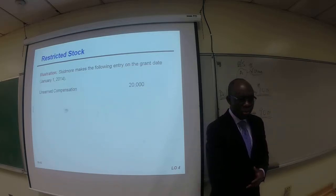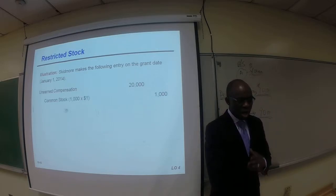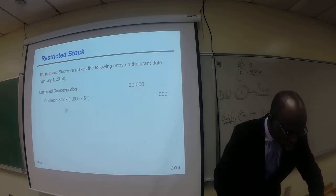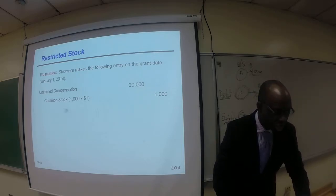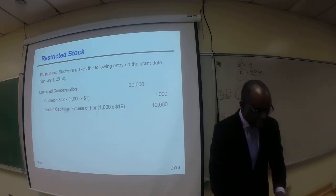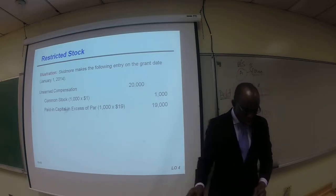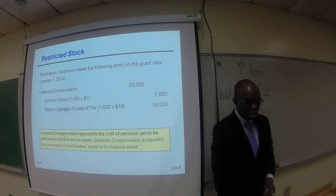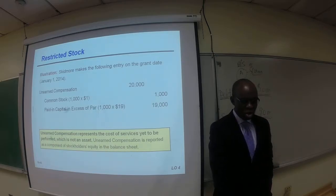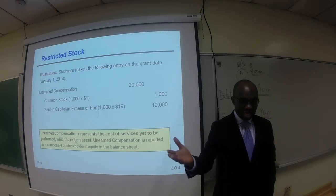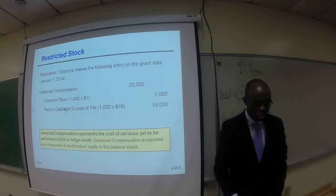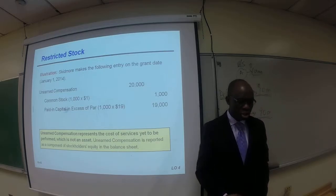They debit unearned compensation for $20,000. The company credits common stock for $1,000, based on the number of shares and the par value, and credits paid-in capital in excess of par for $19,000. Note that unearned compensation represents the cost of services yet to be performed, which is not an asset. Unearned compensation is reported as a component of stockholders' equity in the balance sheet, because the services are yet to be performed.